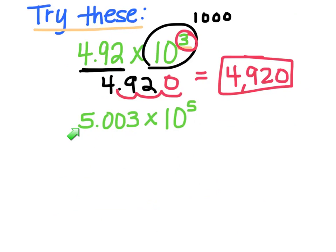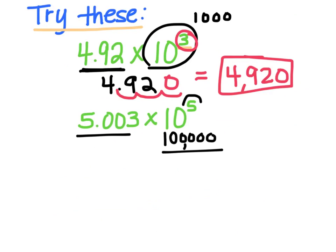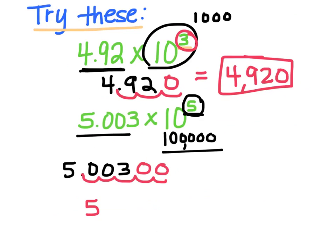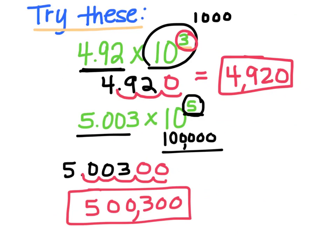Let's take this one. I have that number — it's 5.03 times 10 to the 5th. 10 to the 5th is a pretty big number — it's a 1 with five zeros, so it's actually 100,000. You're taking 5.03 times 100,000. A quick shortcut is to look at the exponent and move the decimal over five places to the right: one, two, three, four, five. My new number is 500,300. That would be my number written in standard form.